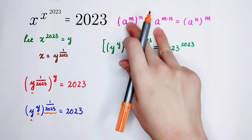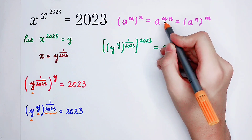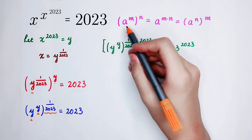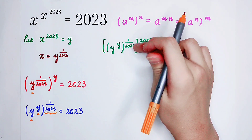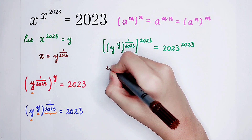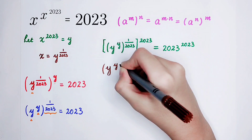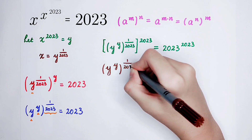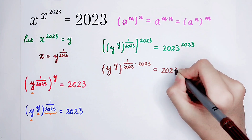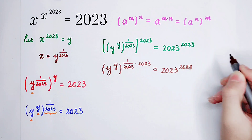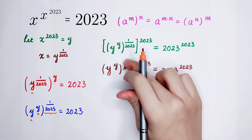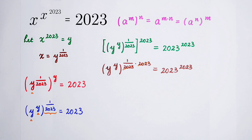Now we should use this formula again: a to the power of m, then all to the power of n, is equal to a to the power of m times n. Here a is y to the power of y, m is 1 over 2023, and n is 2023. So it is equal to y to the power of y, all to the power of 1 divided by 2023 times 2023. This exponent simplifies to 1, meaning the left-hand side is just y to the power of y.